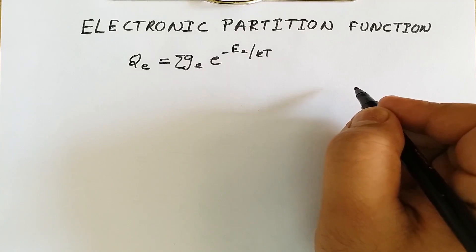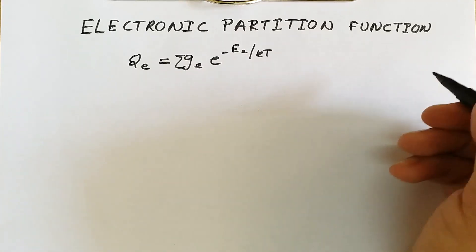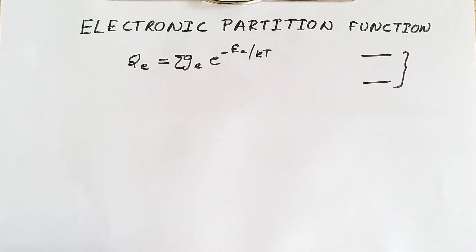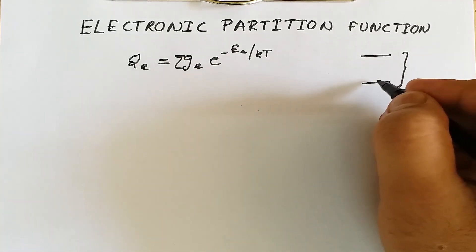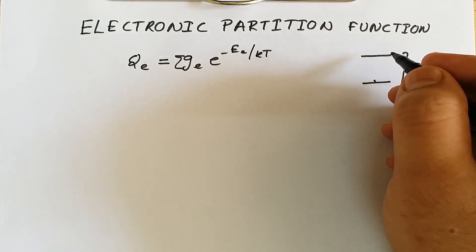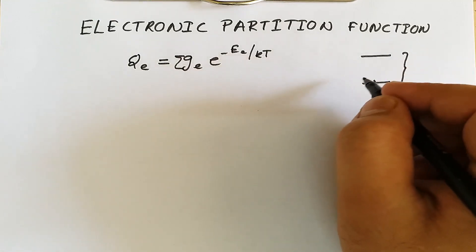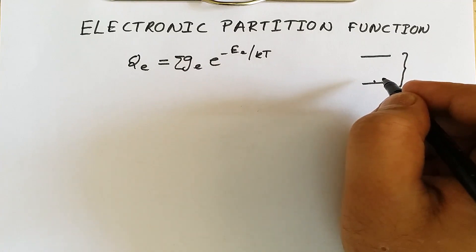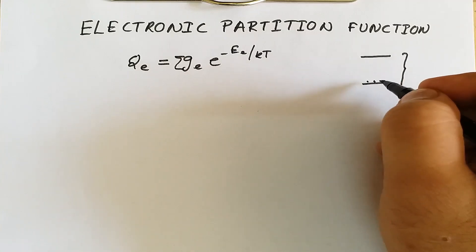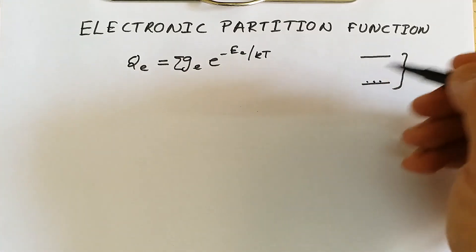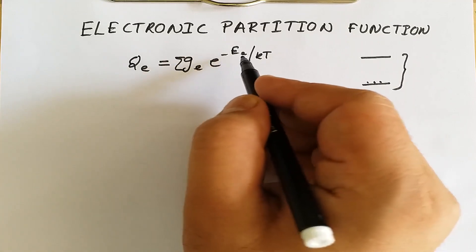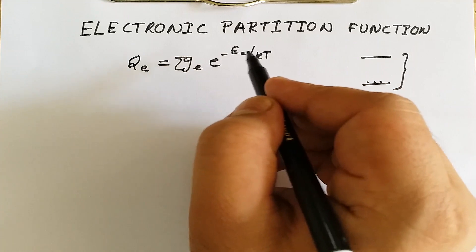For the electronic partition function, it is considered that the energy difference between the ground state and the excited electronic state is very high. This means electrons or atoms cannot jump from the ground state to the excited energy level very easily, and hence all particles are considered to lie in the ground state at ordinary temperatures. The electronic energy ee of any system depends on the type of molecules considered as well as the temperature.